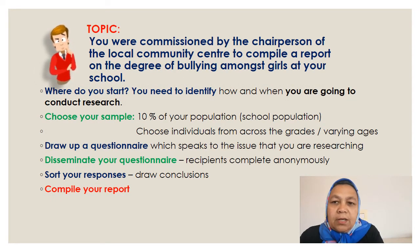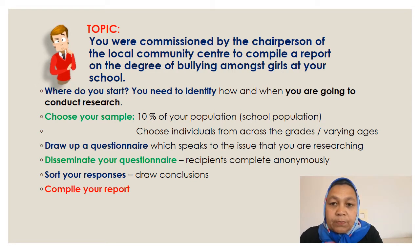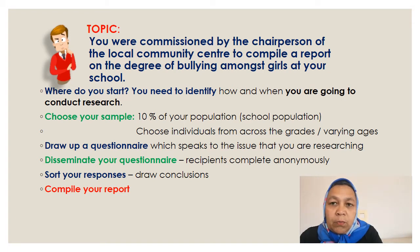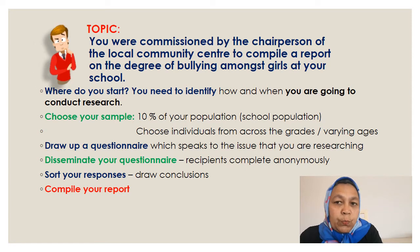Let's say your teacher has given you the following topic: you were commissioned by the chairperson of the local community centre to compile a report on the degree of bullying amongst girls at your school. You need to firstly identify how and when you are going to conduct your research. You need to choose your sample — a sample is normally 10 percent of your population — because it is logistically impossible to include the entire population.